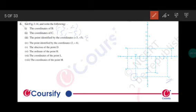Point identified by the coordinates 2 comma minus 4. So 2 in positive direction of x, that is this, in negative direction of y, that is 4. And this point is G.